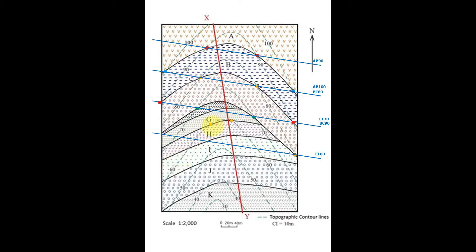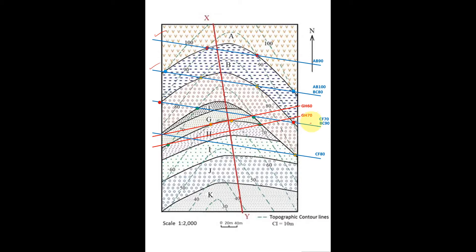The GH bedding junction has the 60 contour intersecting it twice, so we can draw a definite strike line through it. This red-colored strike line has a different direction to the blue strike lines of the northern bedding planes. The 70 contour also intersects GH here and here, giving strike line GH 70. Once the strike direction is established, parallel lines can be drawn for junctions with only one known intersection point.